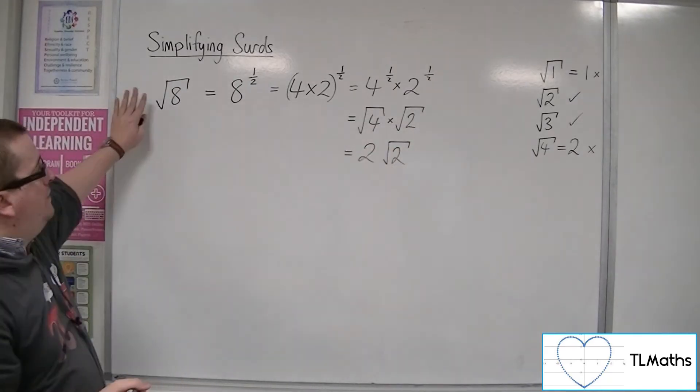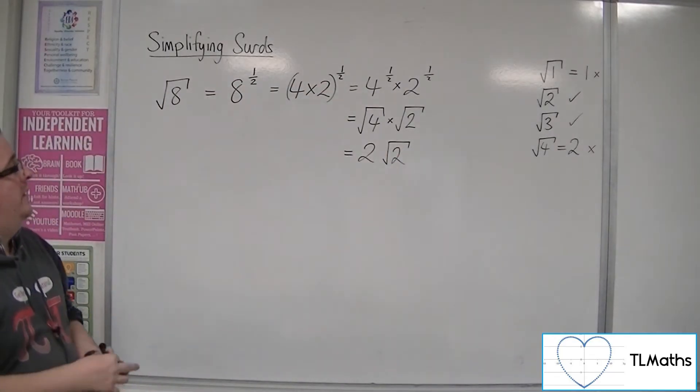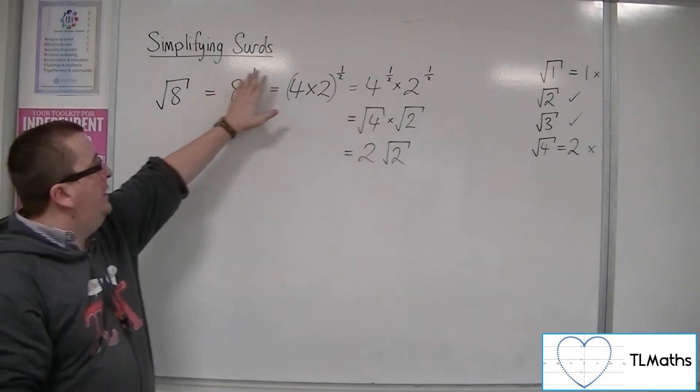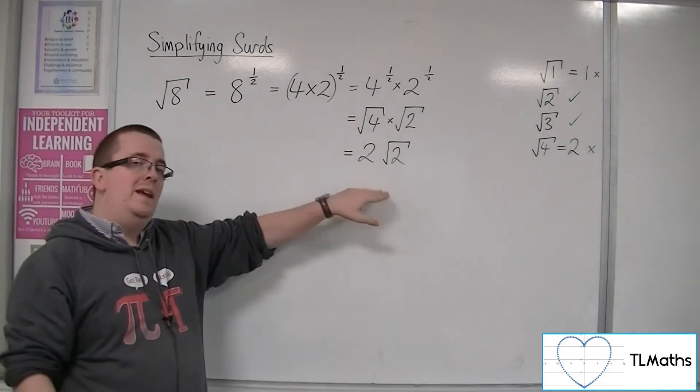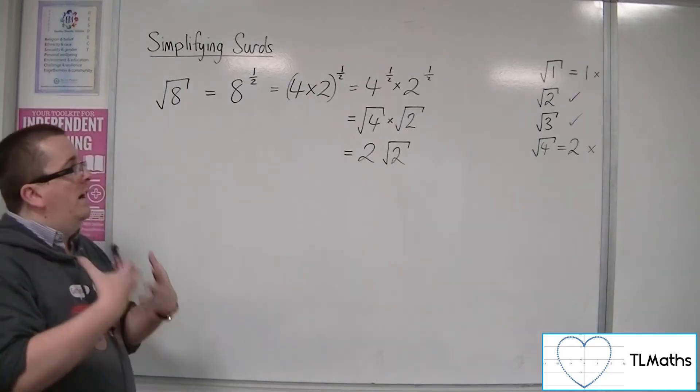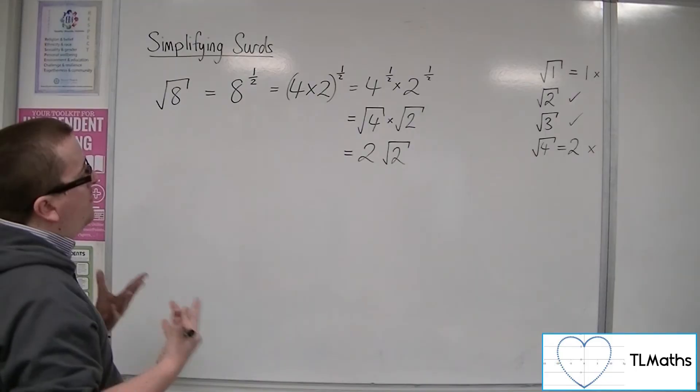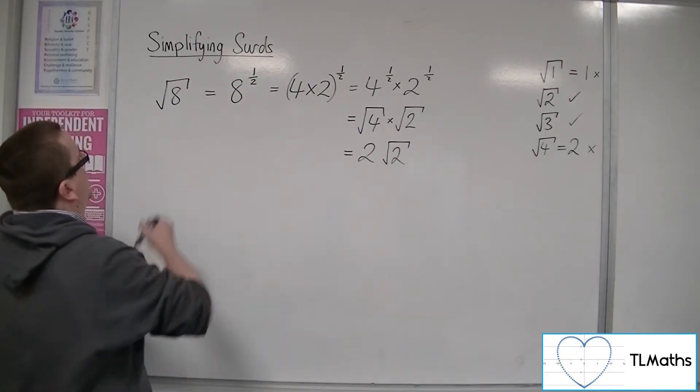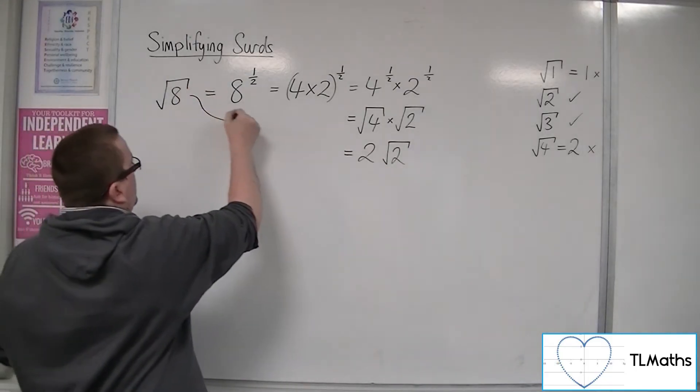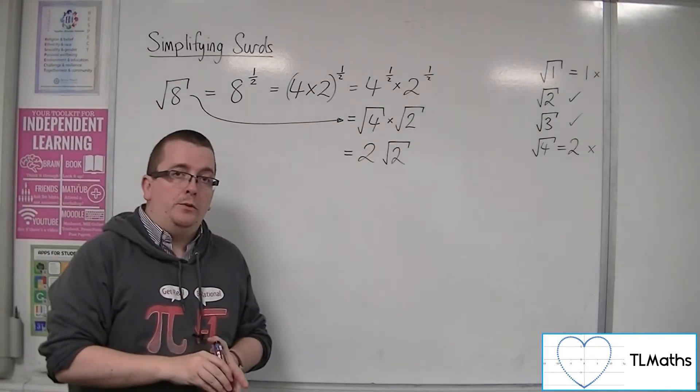So I've gone through this quite long and arduous process to get from root 8 is the same as 2 root 2. And it's all coming down to using our indices knowledge. That's what's working in the background to allow you to go from this step to this step. That's really what we want to be able to do.